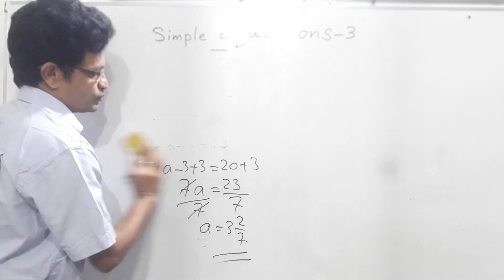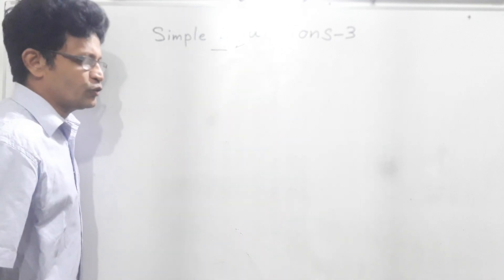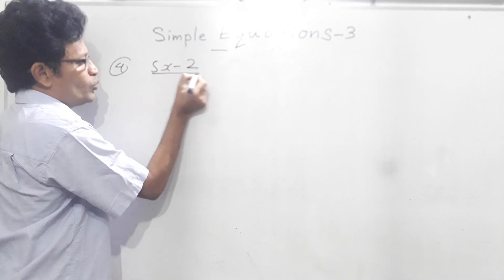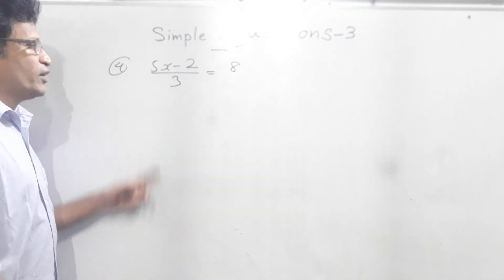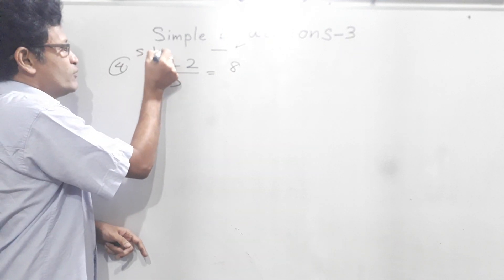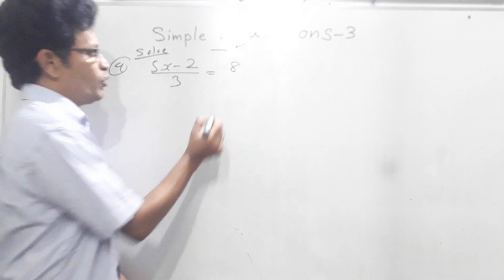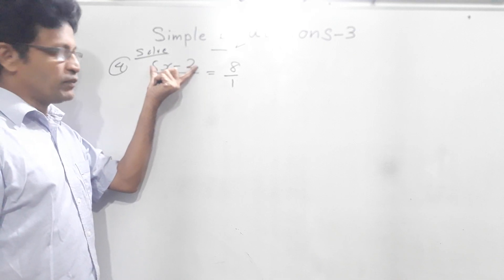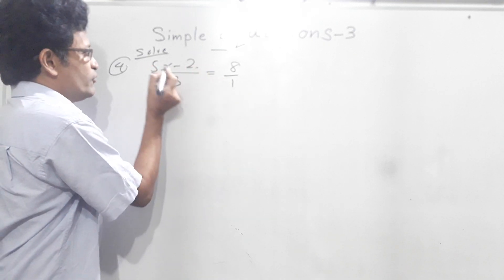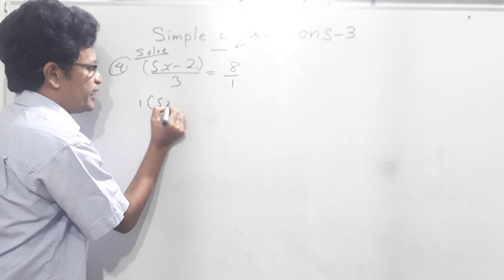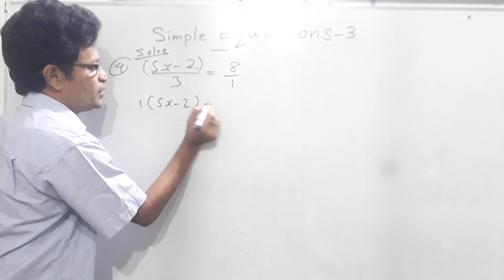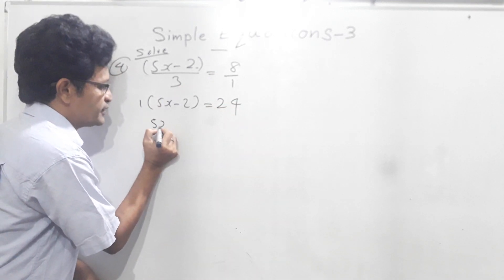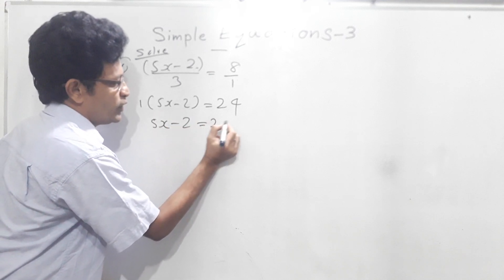Now we do the fourth question. Fourth question is: 5x minus 2 over 3 equals 8. Here we have to find the value of x. 8 means 8 over 1. Now we have to do the cross multiplication. That means 1 and (5x minus 2) we have to multiply, and 3 and 8 we have to multiply. We can put a bracket here. Then 1 times (5x minus 2) equals 24.